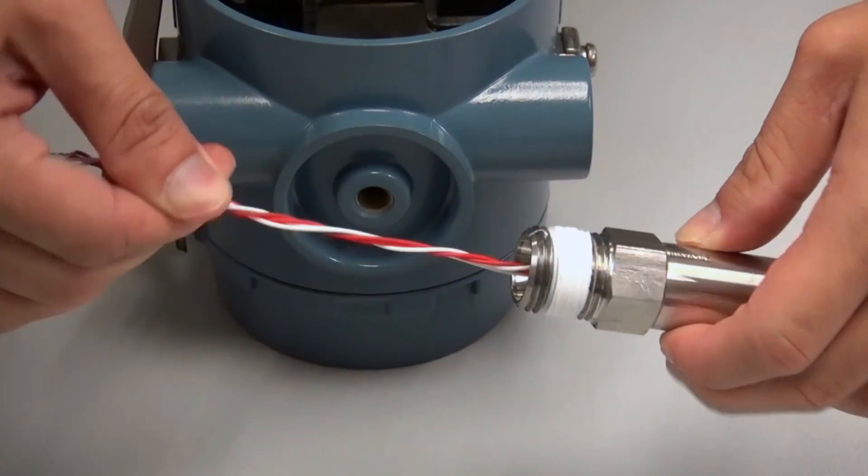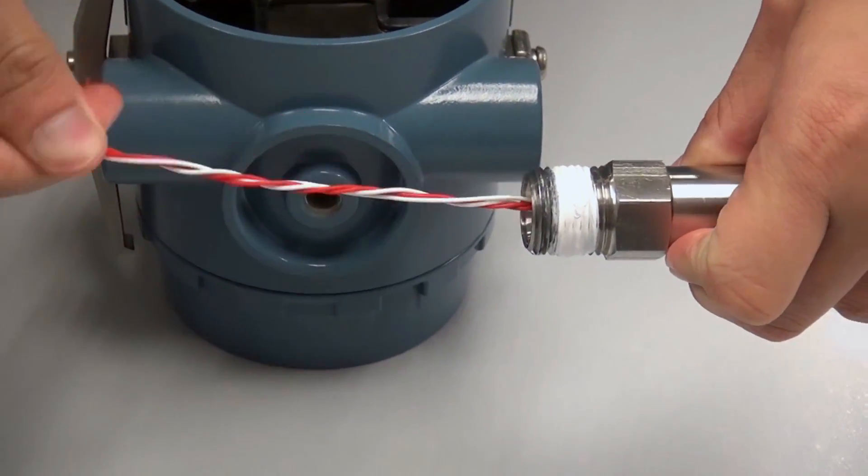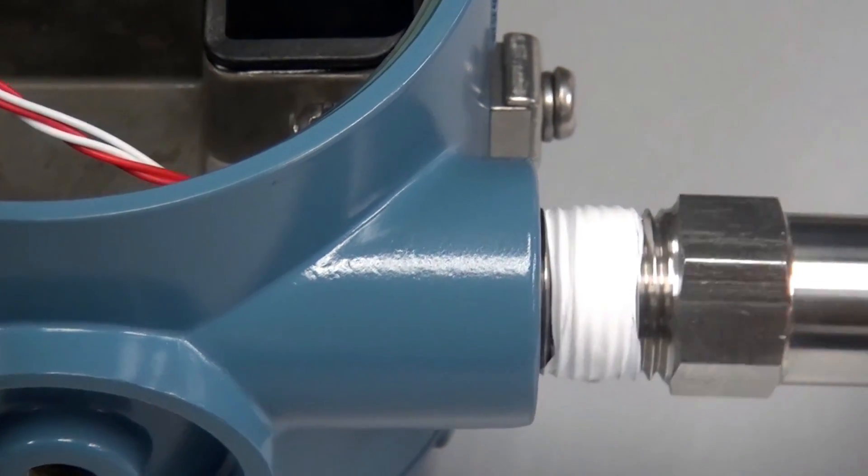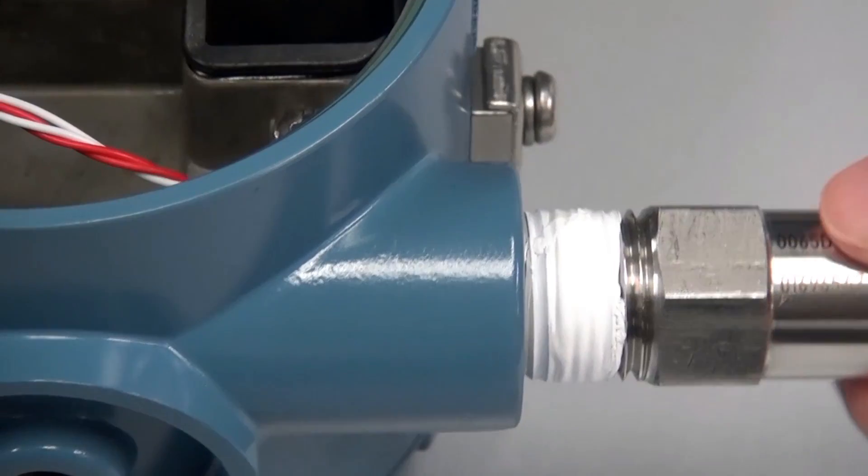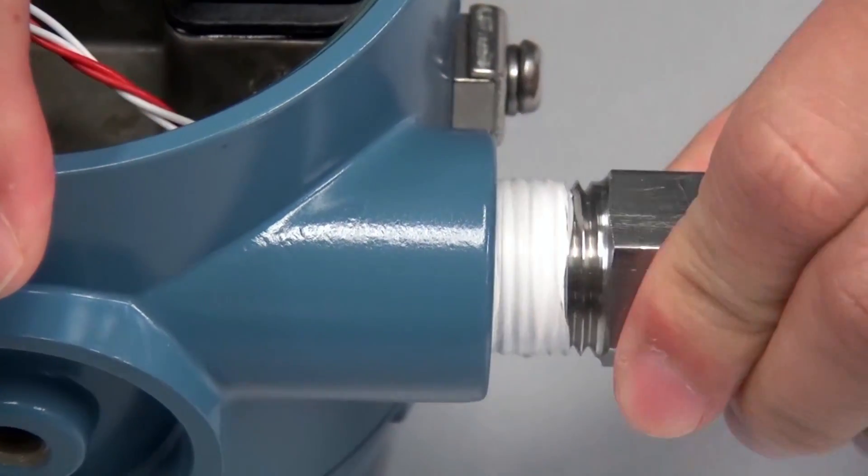To begin, twist the wires on the sensor together to form a single wire braid. Then, slide the wires through any conduit opening of the transmitter and screw in the sensor by hand until snug.